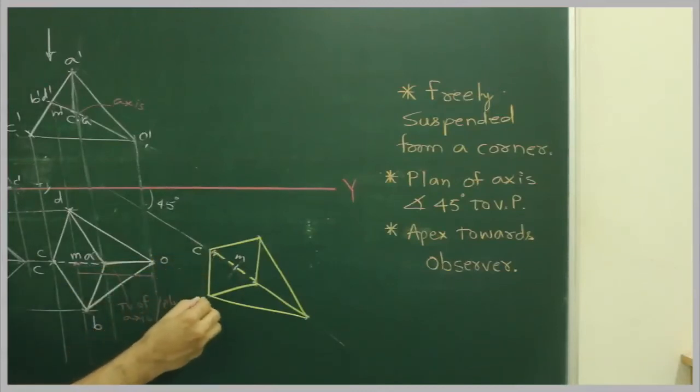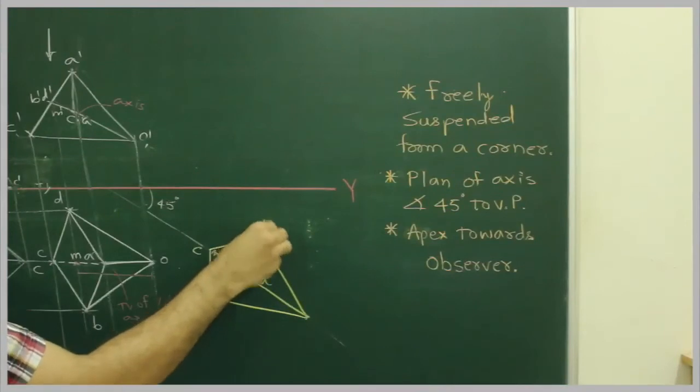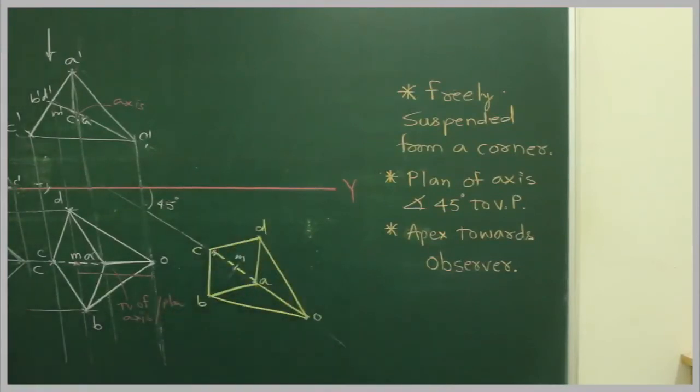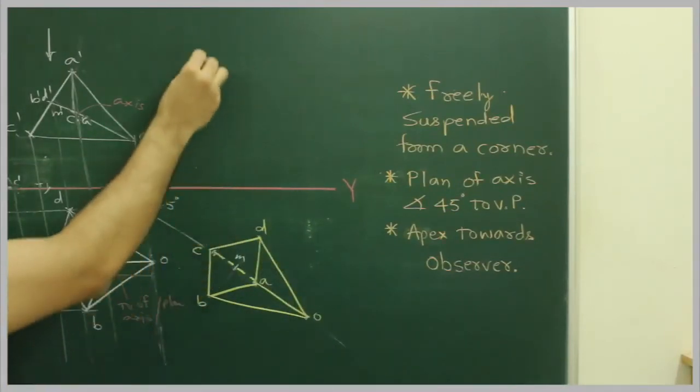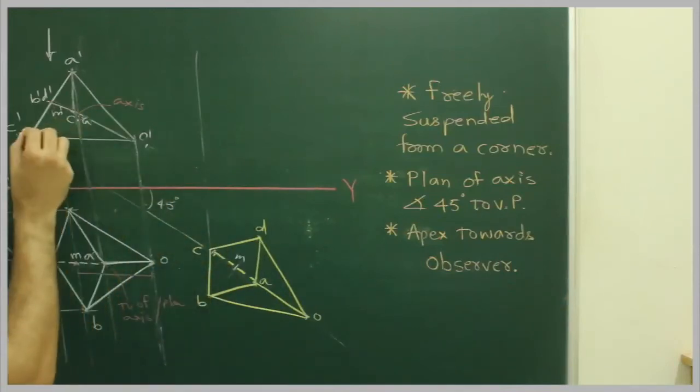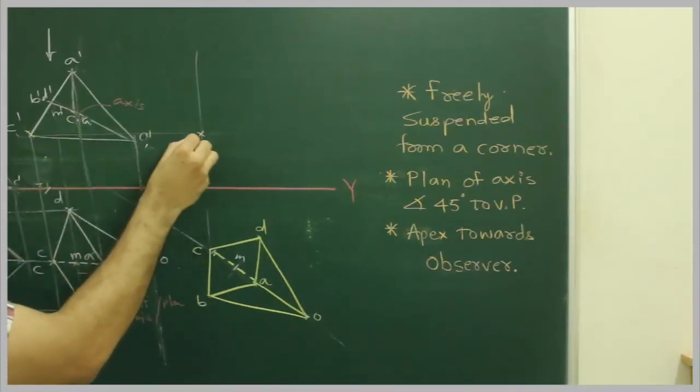This is C, this is B, A, B. Now we will extend C from here, C from here, so we get point C dash.